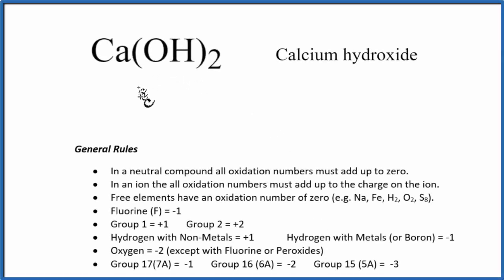To find the oxidation numbers for each element in Ca(OH)2, calcium hydroxide, we'll use these rules. First, we need to note that calcium hydroxide doesn't have a plus or minus charge after it. That means it's a neutral compound, and all the oxidation numbers are going to add up to zero.